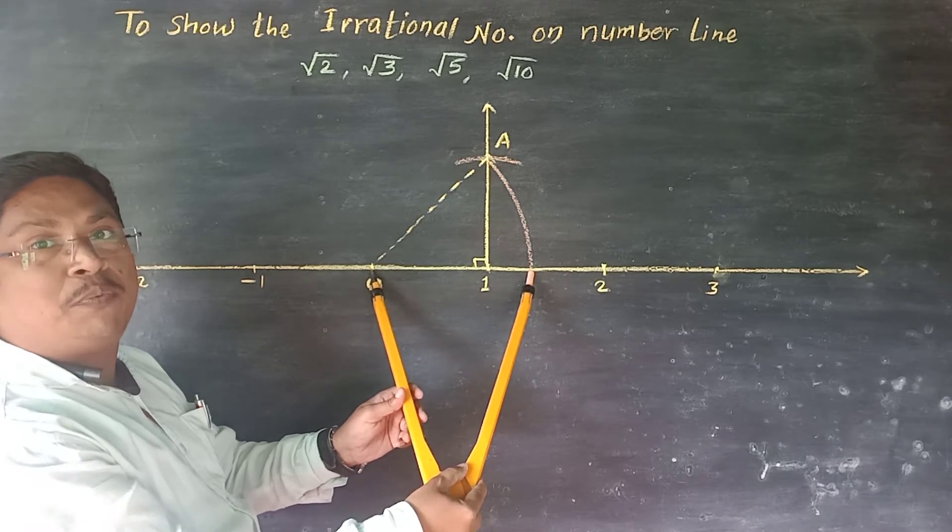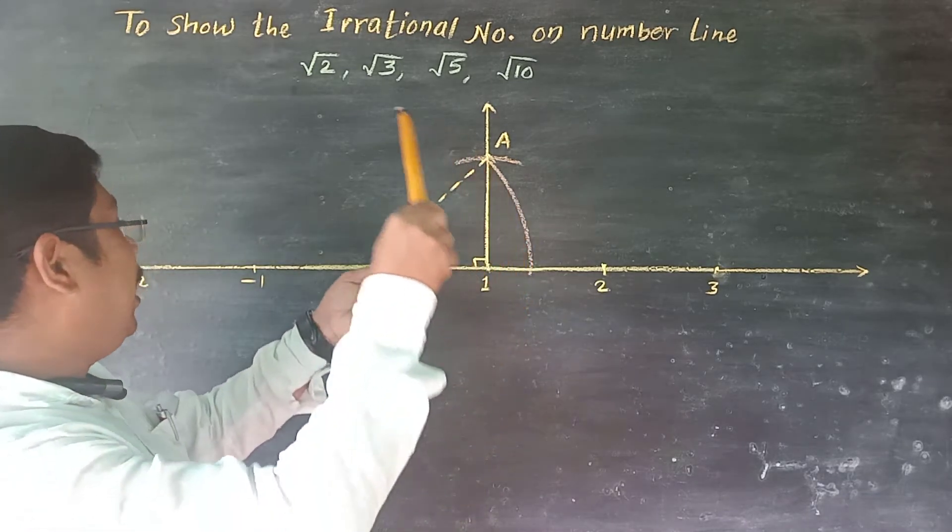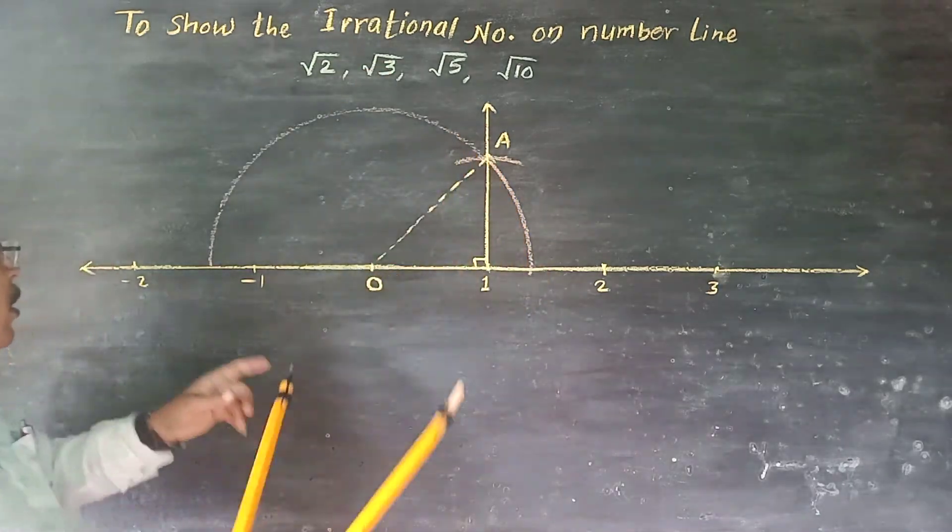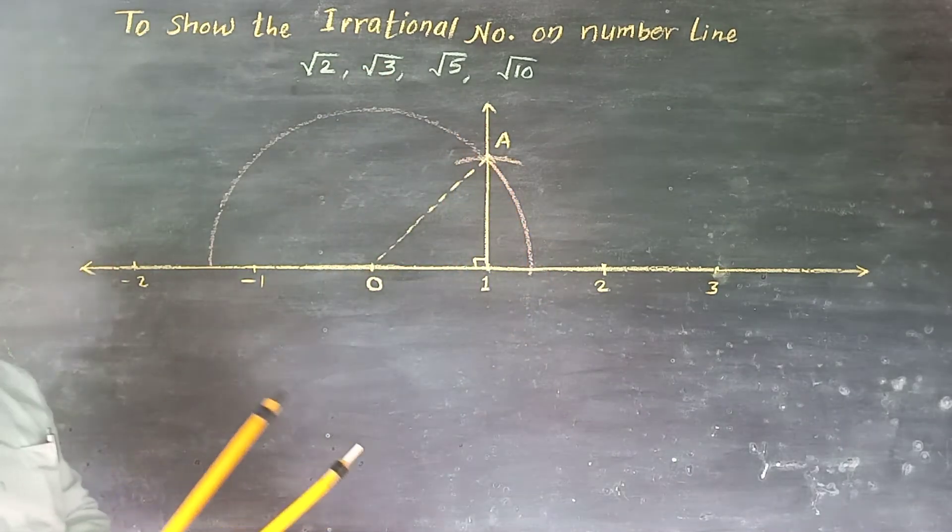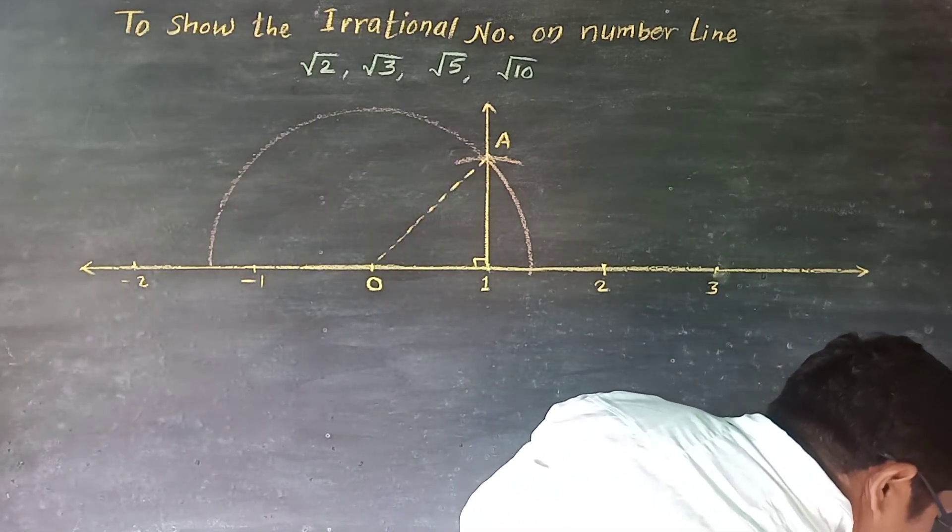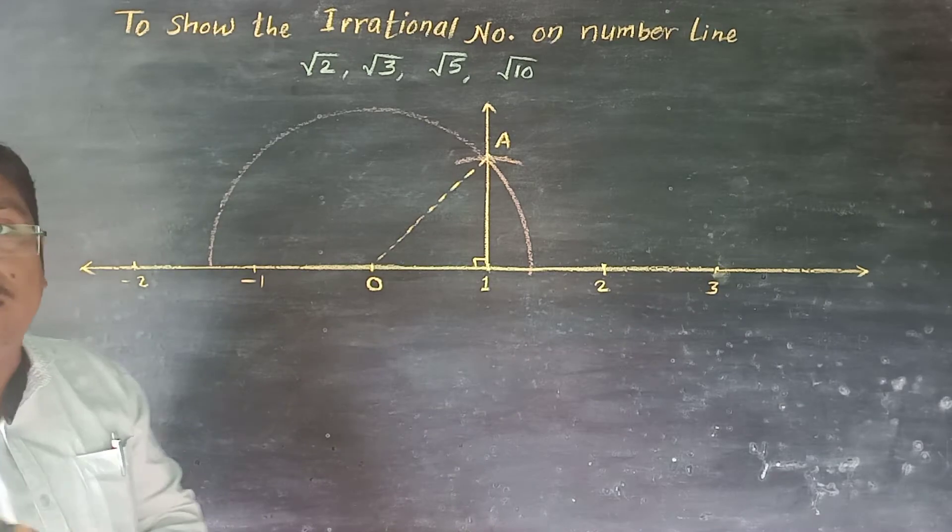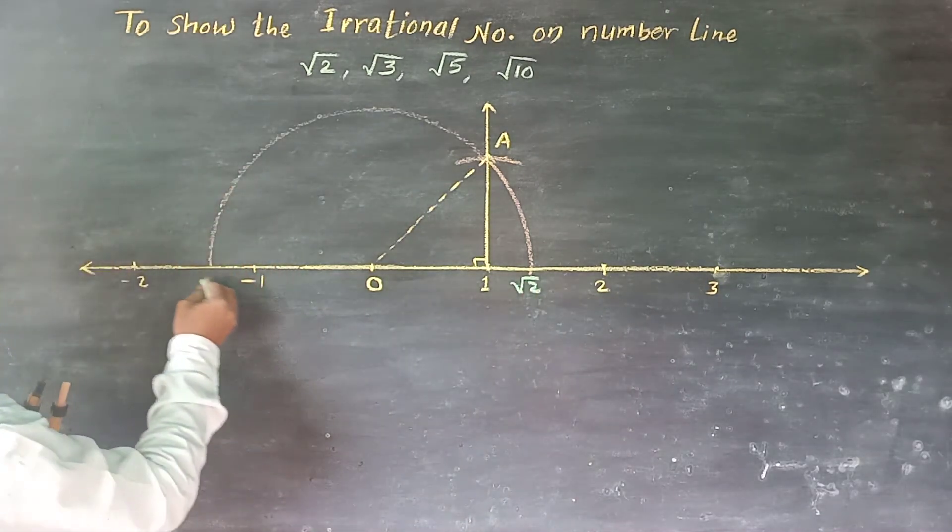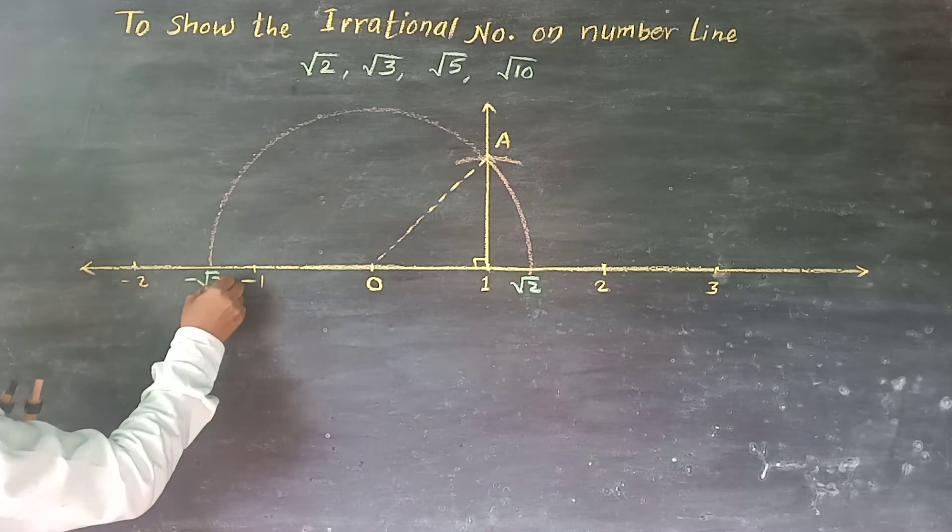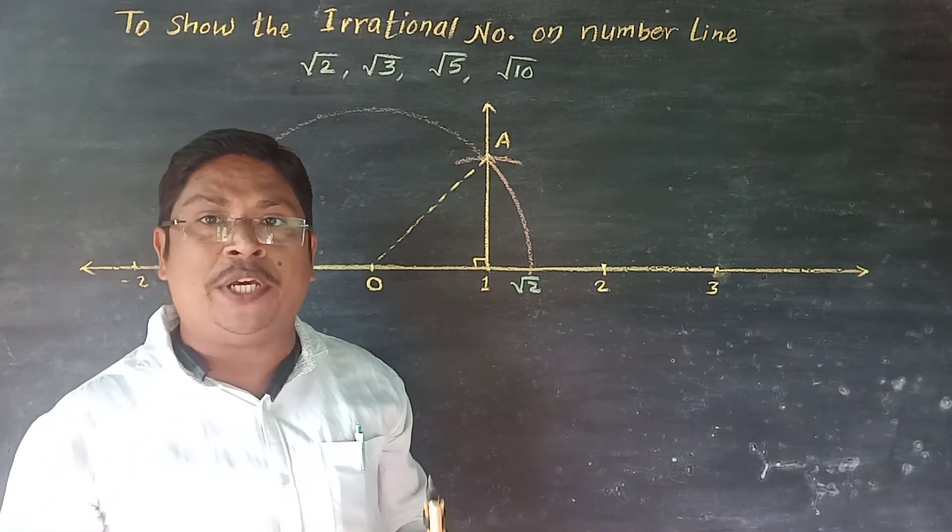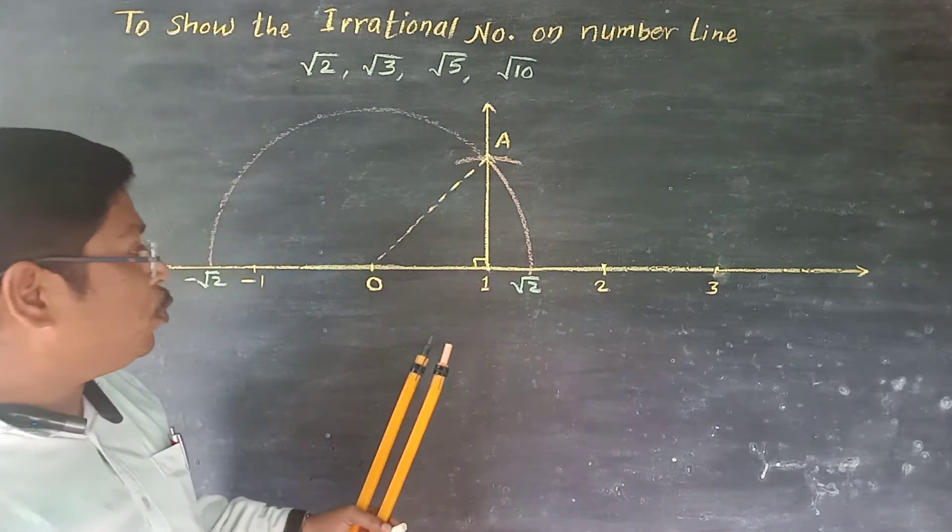This value is root 2. This value is root 2 and this value is negative root 2. Now here the second one, the procedure is the same.